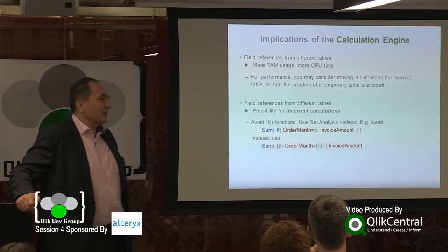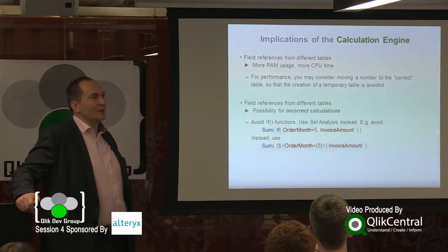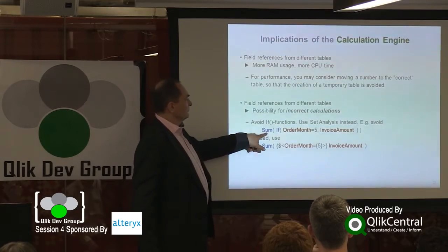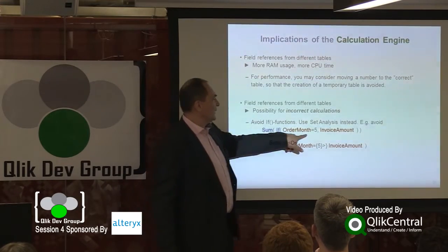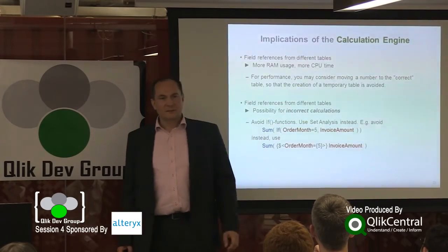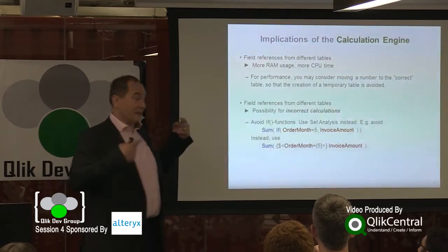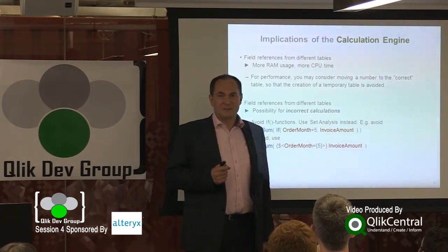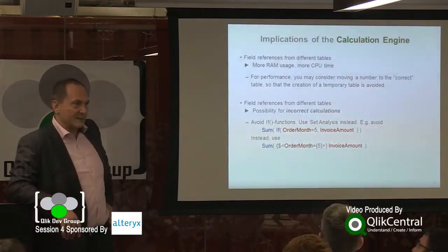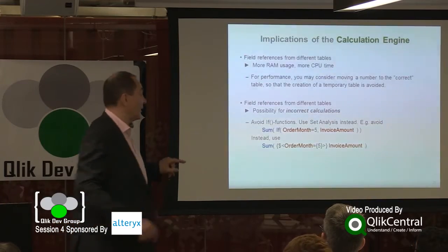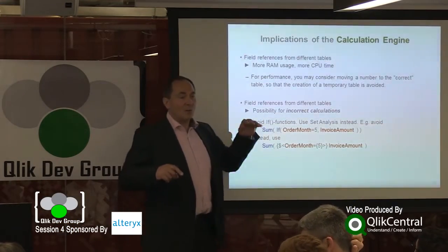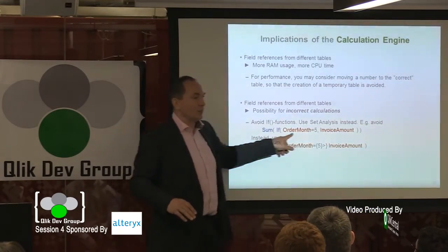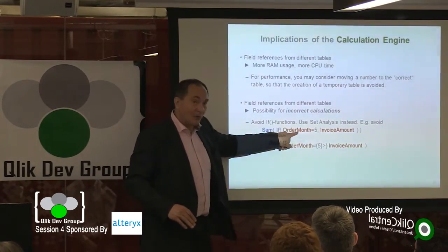Another implication, which is a little bit more subtle, is that the Qlik's engine could calculate the wrong number. For example, if you write: if order month equals five, then sum invoice amount — the person who writes this thinks they want to sum the invoice amount in the invoice line table. But since there is a field reference from another table, it will create all the combinations. Think of a database where you have order lines and invoice lines as a many-to-many relationship — this will explode, with many more records to sum. So this will give you the wrong answer.